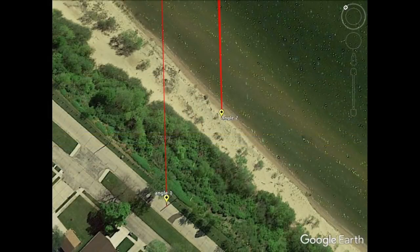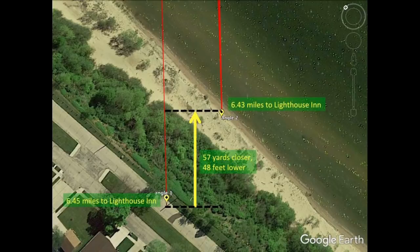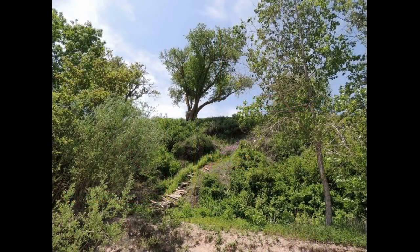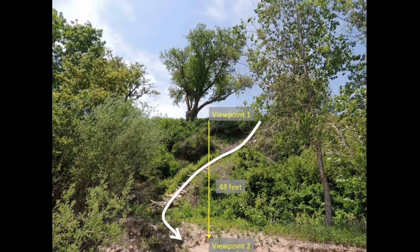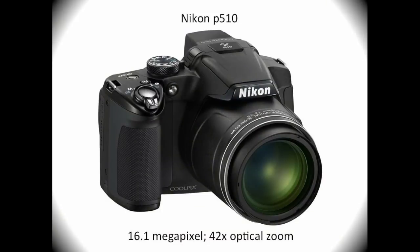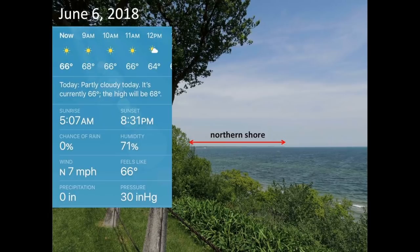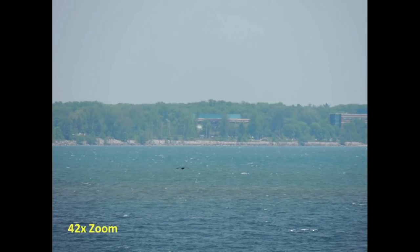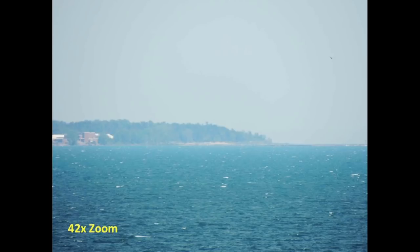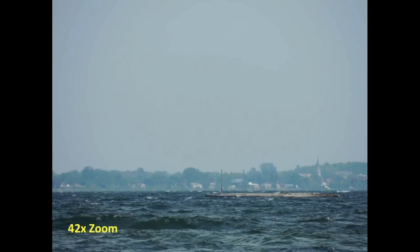Here are the two angles I took my pictures from. The first is from the top of the cliff, and the second is from the edge of the lake, which is 48 feet lower and also 57 yards closer to the other shore. I took about a dozen pictures from the top of the cliff, climbed down a treacherous little path, and took another dozen or so from the bottom, crouching down to about three feet above the lake surface. Here's the camera I used — a Nikon P510 with 42x zoom. The whole process from first picture to last took under 10 minutes.